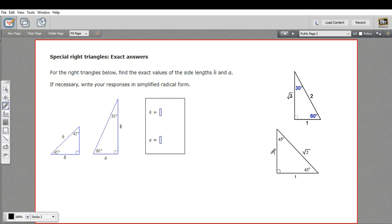In a 45-45-90, two of the sides, if those two sides are one, then the hypotenuse is square root of two. So whatever this side is, you'd multiply it by the square root of two to get the hypotenuse.